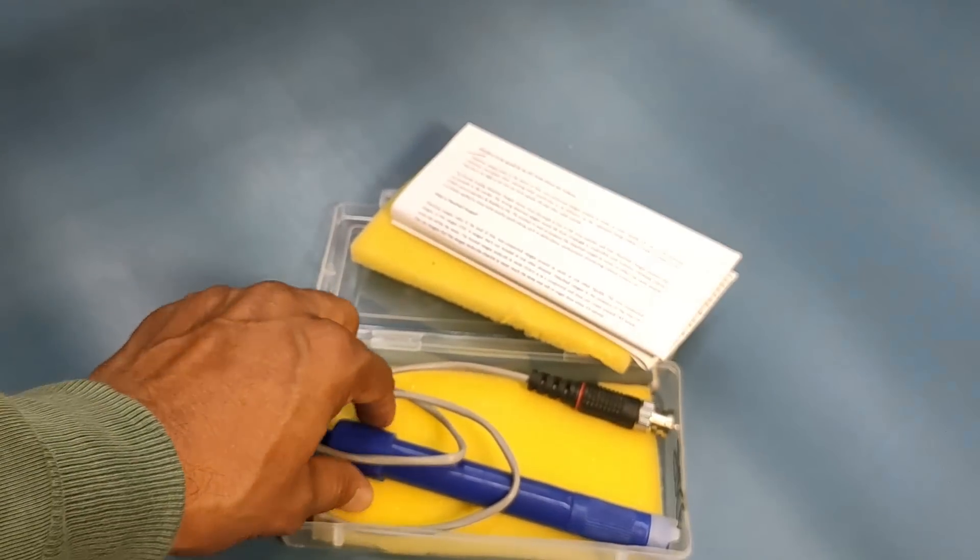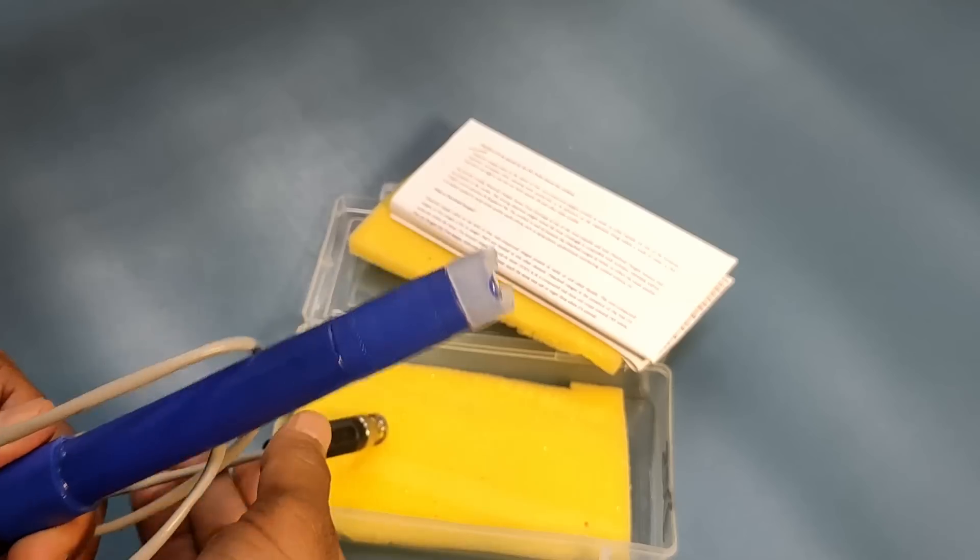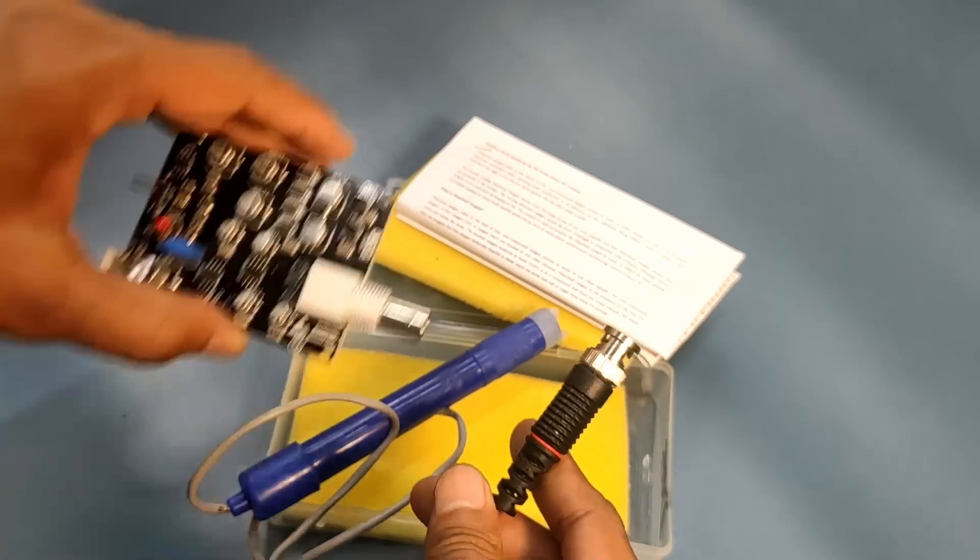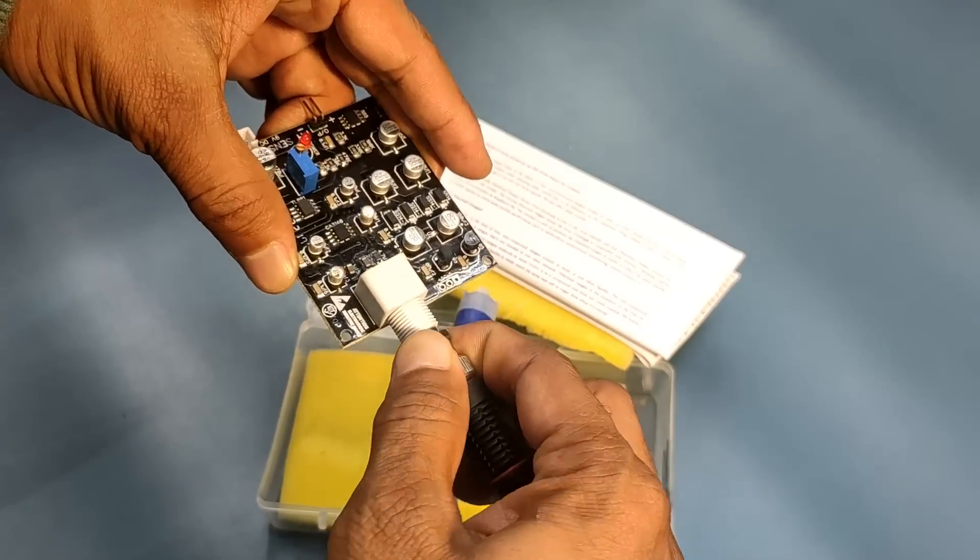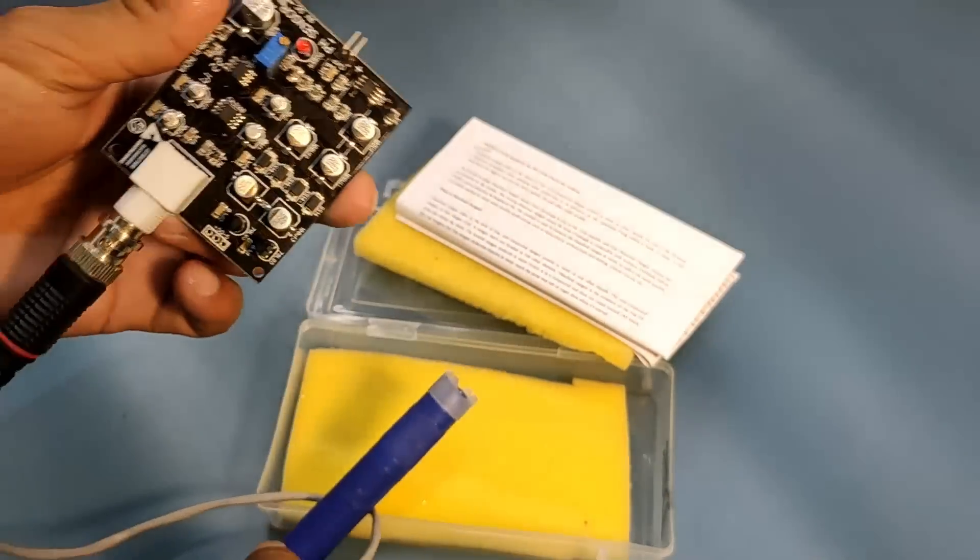The sensor tip should be covered by a membrane cap where a solution needs to be filled. Check out the video for more details on assembling the D.O. membrane and filling the membrane cap with KCL solution.